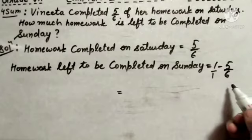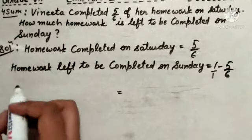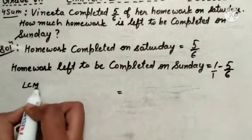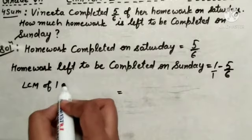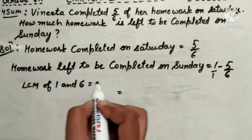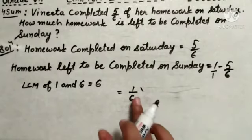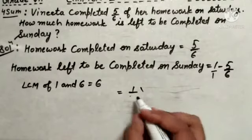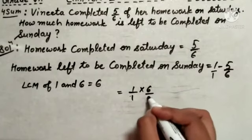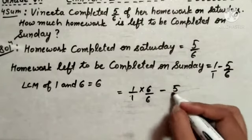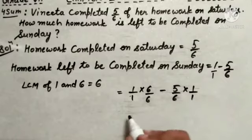LCM of 1 and 6, that will be equals to 6. So, what we can write LCM of 1 and 6 that is equals to 6. Therefore, 1 upon 1 will be multiplied by 6 upon 6 minus 5 upon 6 is multiplied by 1 upon 1 to make the denominator as 6.